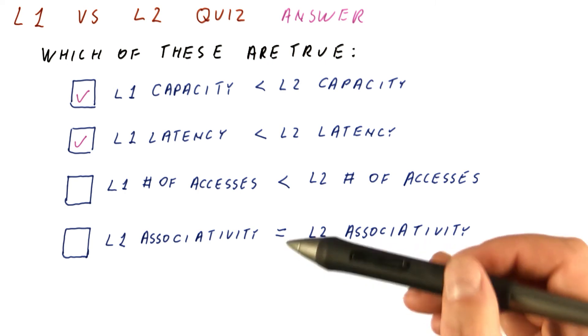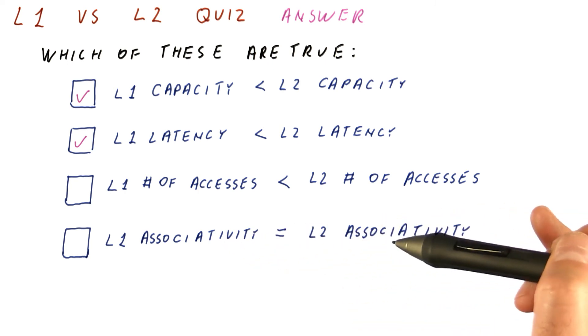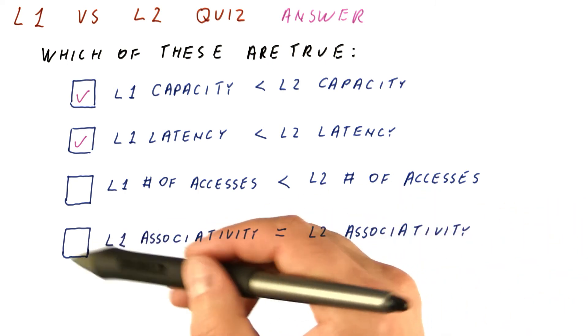So typically, that's what happens. L1 has a lower associativity than L2, so this is also not true.